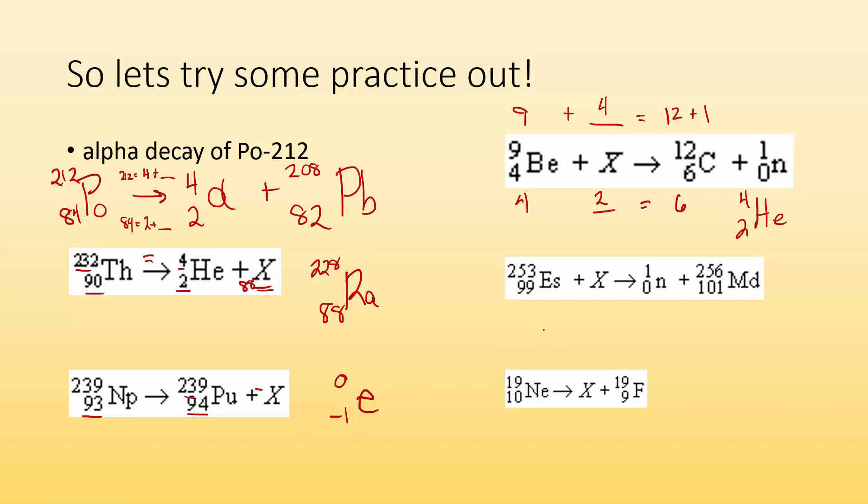Taking a look at this one. I got Einsteinium 99, 253 its mass, something, giving me a neutron, and MD 256. I'm going to start with mass this time. 253 and some number has to equal 1 and 256. That missing mass has to be 4. I'm going to do the same thing but for the charge. 99 and some number has to equal 0 and 101. So that missing number is going to have to be a 2. So mass of 4, charge of 2, that is an alpha particle.